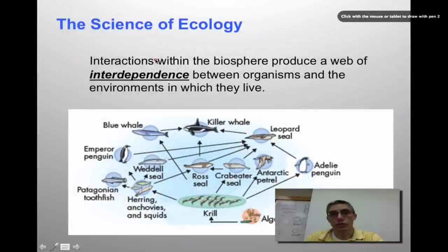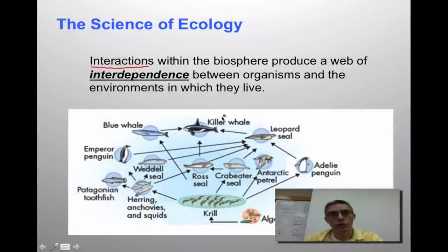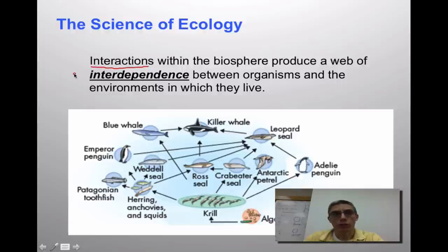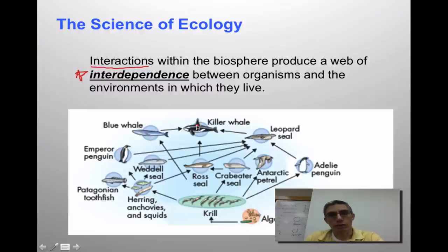You cannot talk about the science of ecology without talking about interactions. Those interactions include not only interactions between living organisms, but also between those organisms and their physical environment. A word we often use when talking about ecology is interdependence — we use that word because one organism relies on another, or it could be the physical environment that that organism lives in.